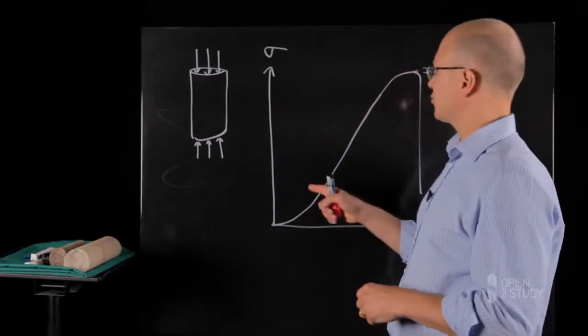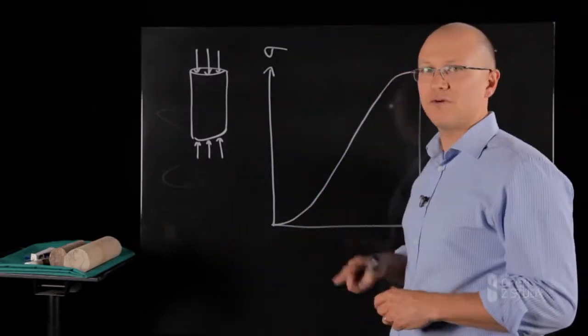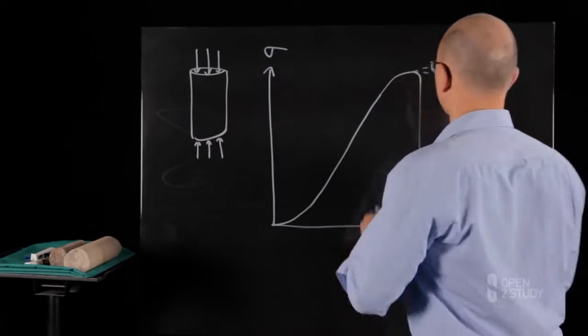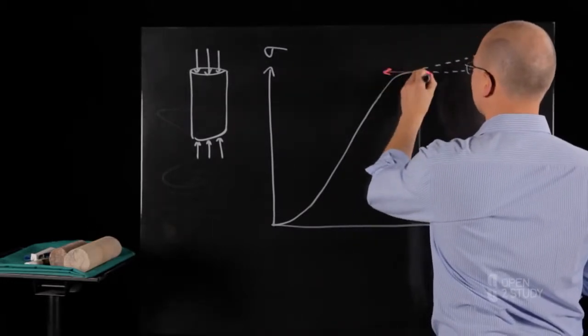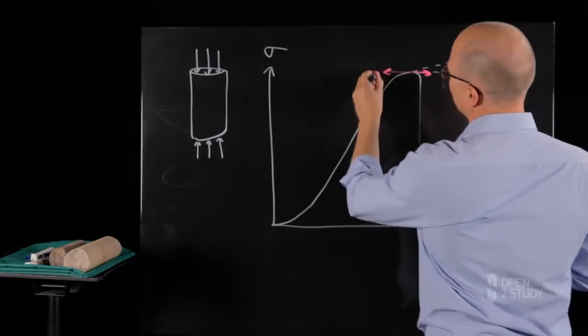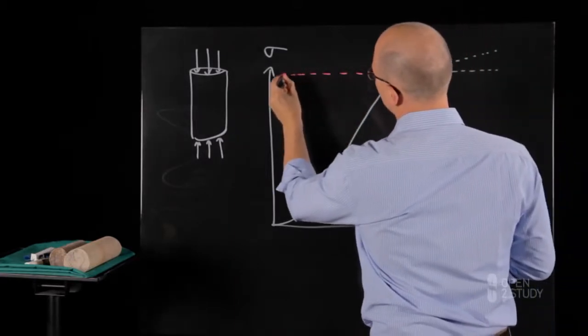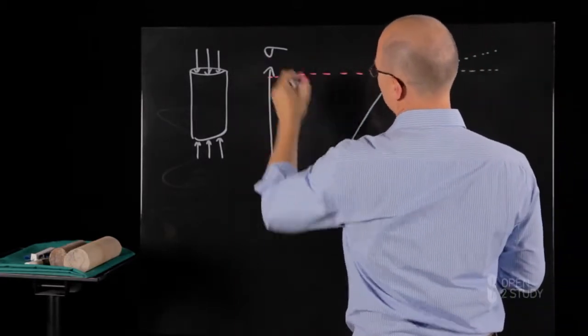From this mechanical response we can determine the unconfined compressive strength of the rock. This corresponds to the peak value sustained by the rock specimen and we can read the value here on the stress axis.